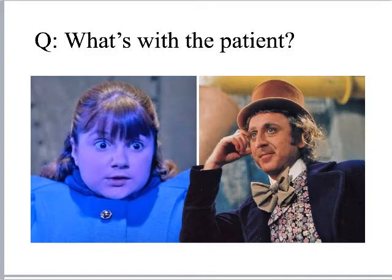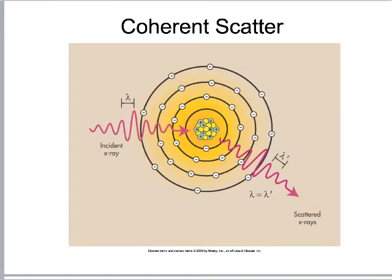Now we move out of the x-ray tube and into the patient. The first interaction inside the patient is coherent scatter. This happens with low-energy x-rays, and notably no ionization occurs — it's just an example of how x-rays wind down their energy. They go through a series of coherent scattering events, exciting the nucleus and exiting in a different direction with slightly reduced energy. This is not within the diagnostic energy range.